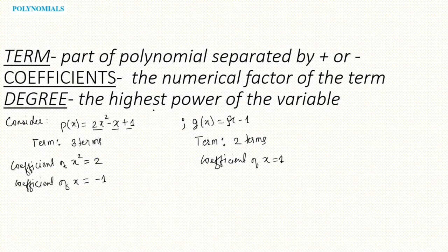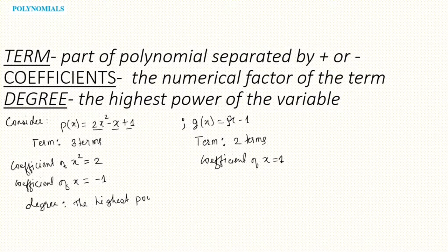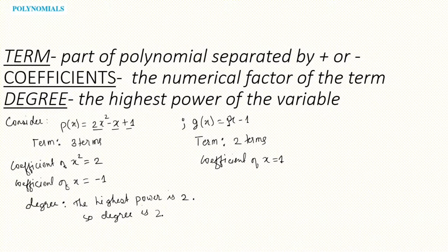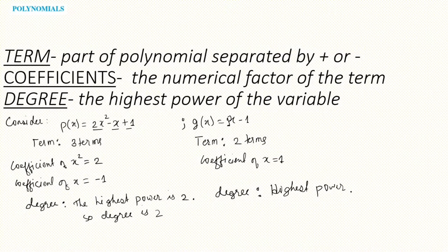The degree of a polynomial is determined by the highest power of the variable. In p(x) = 2x² minus x plus 1, the highest power is 2, so the degree is 2. In q(x) = x minus 1, the highest power is 1, so the degree is 1.